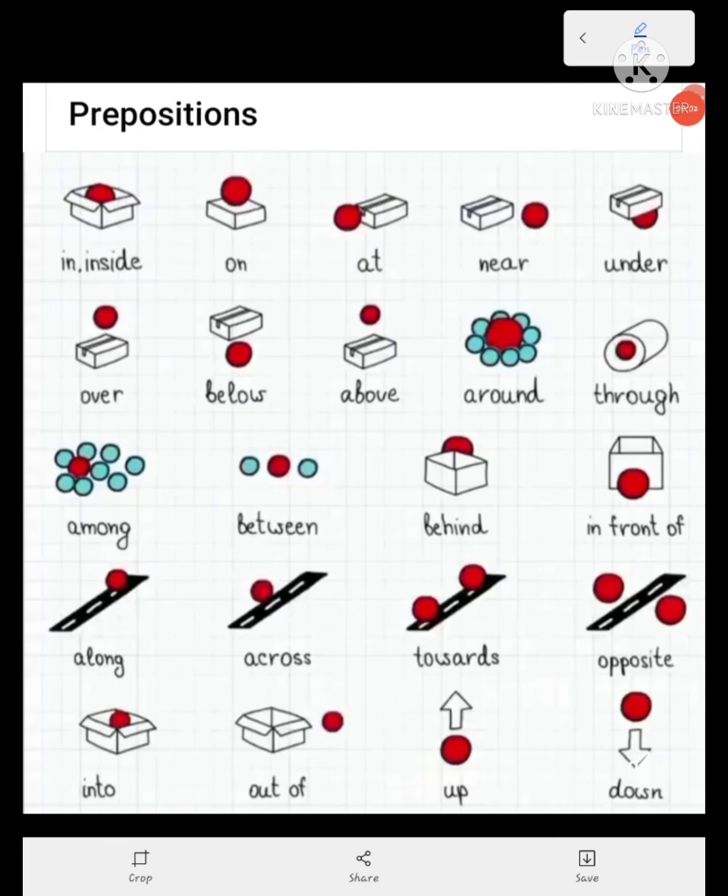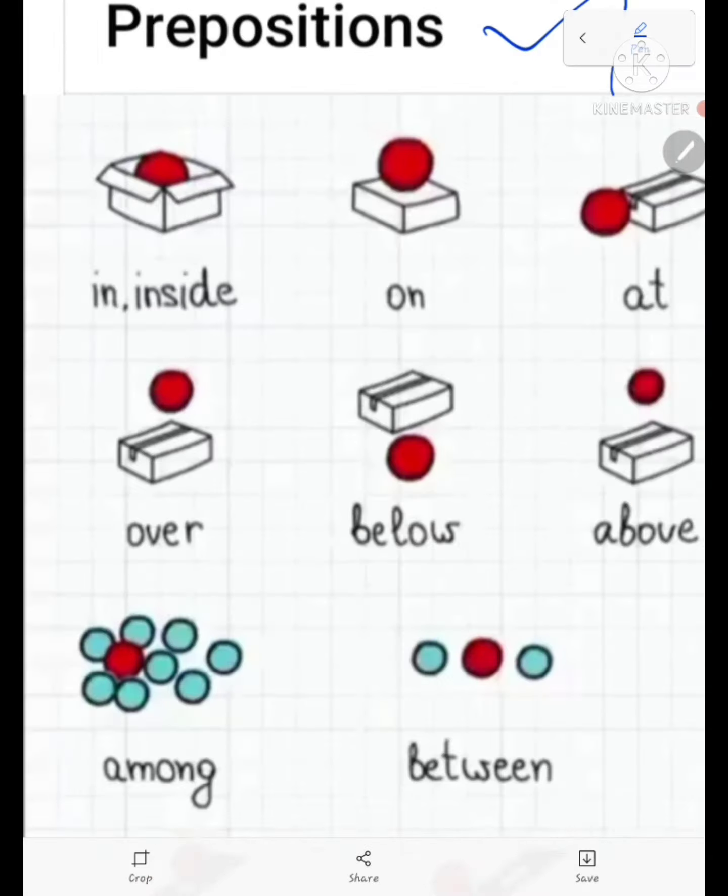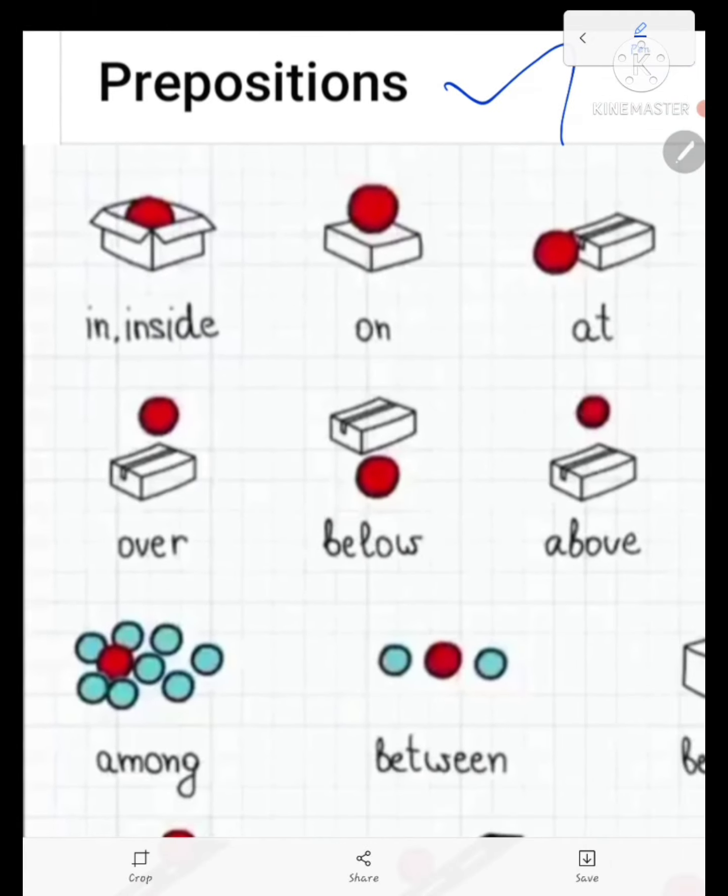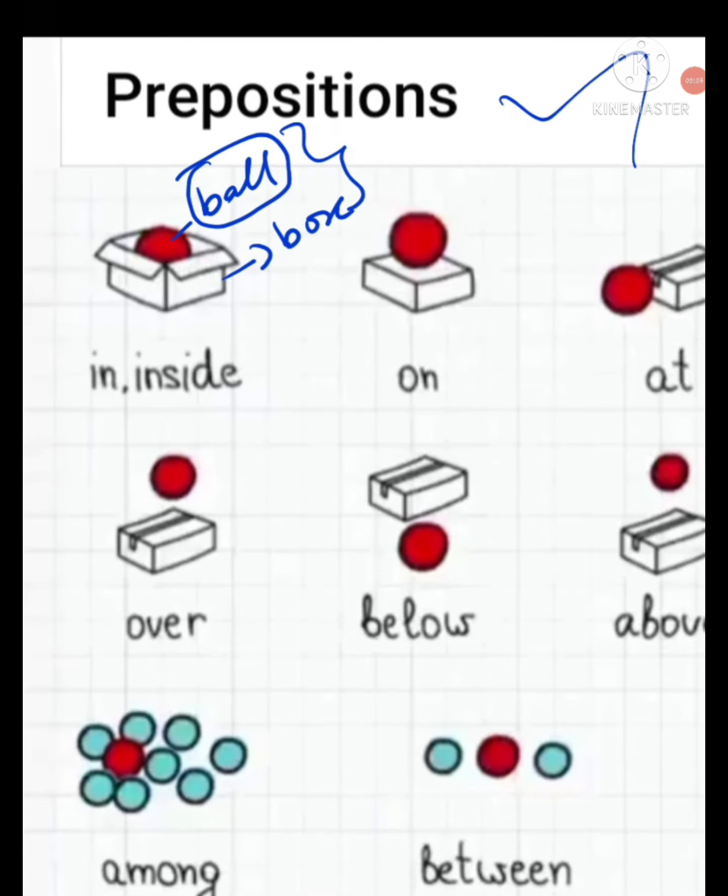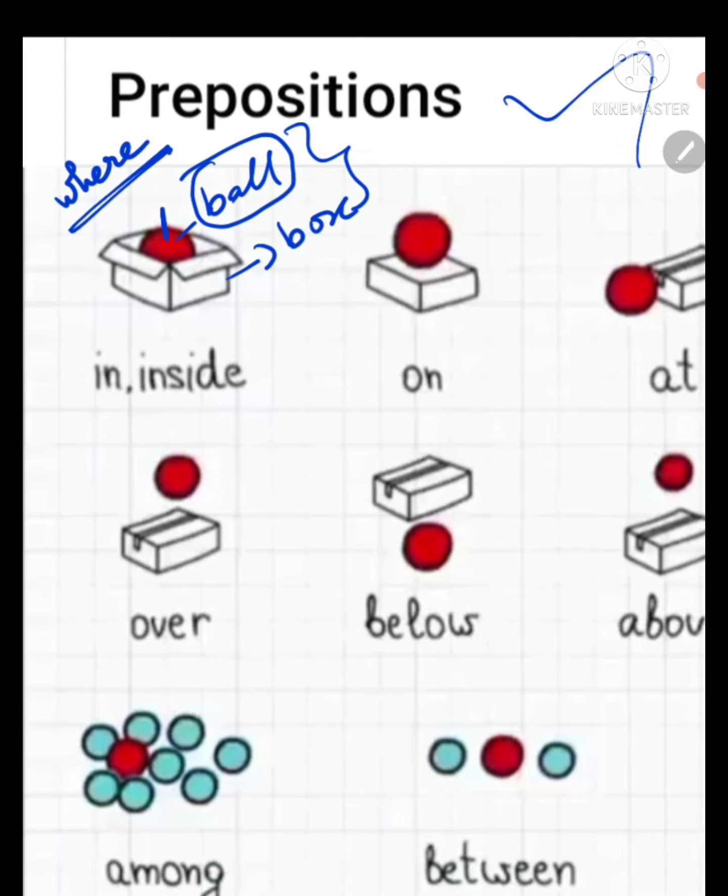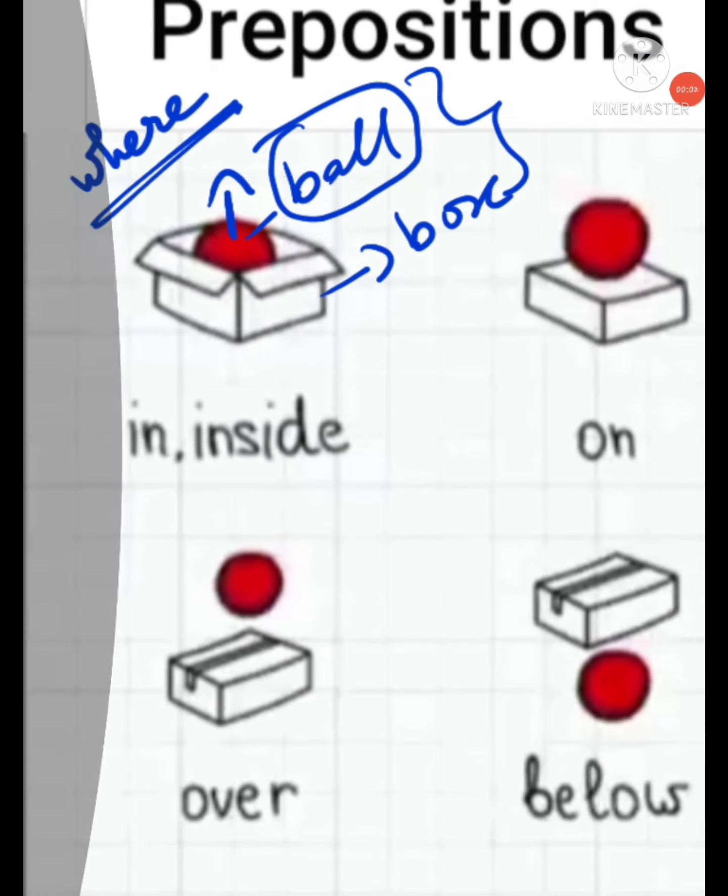Hello children, now let us see some prepositions. What are all the prepositions? See here, the ball is a noun and the box is also a noun, so we are going to use these two nouns. Now we are going to see where exactly the position of this ball.